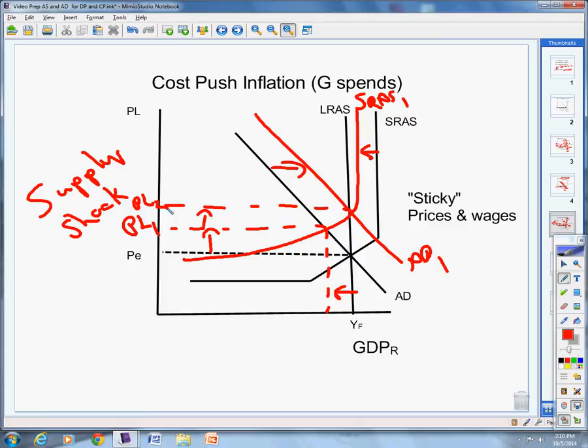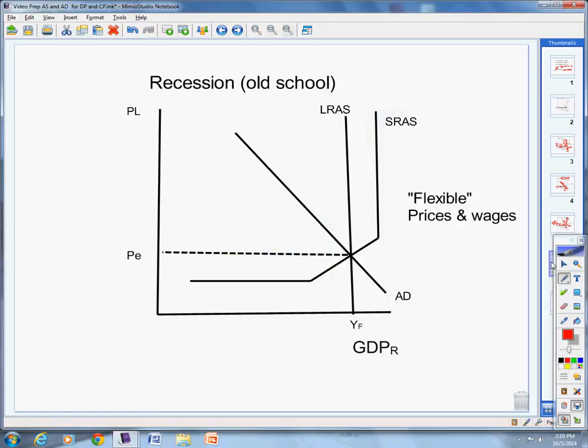So, here's a solution where we create even more inflation because the government steps in and starts spending money. That's most common in today's world. That those things would happen with demand pull inflation and cost push inflation.